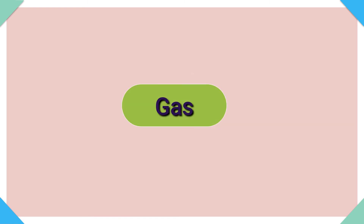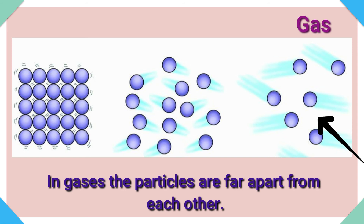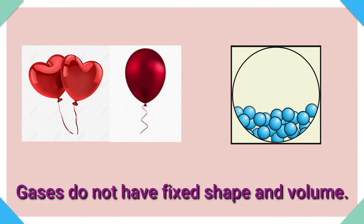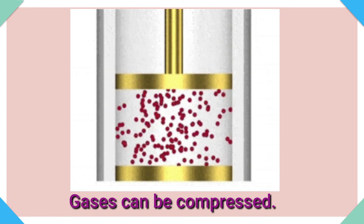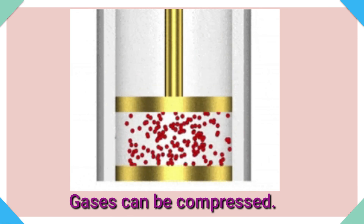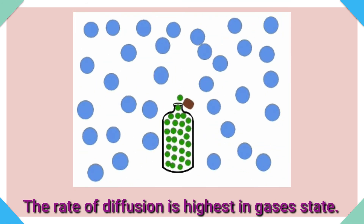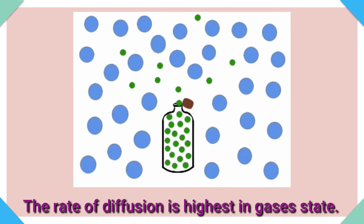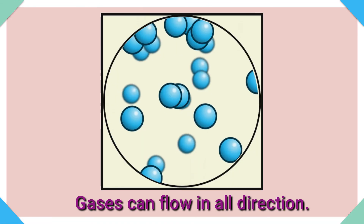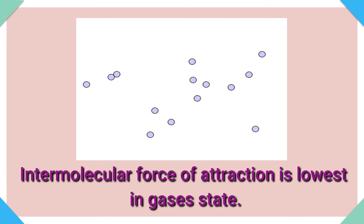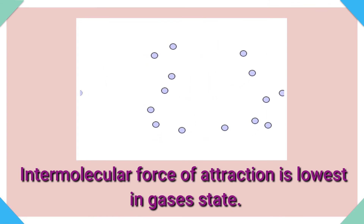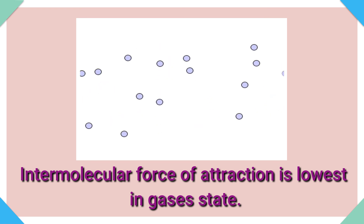Next one is the gas state. In gases, particles are far apart from each other. Gases do not have fixed shape and volume. The gaseous state has the highest compressibility compared to solid and liquid. The rate of diffusion is higher in gaseous state. Gases can flow in all directions. The intermolecular force of attraction is lowest in gaseous state, because the molecules are far apart from each other.